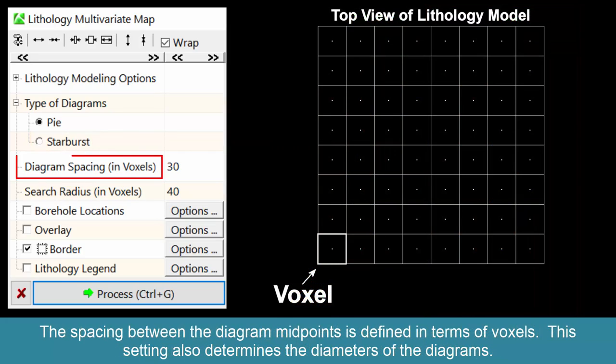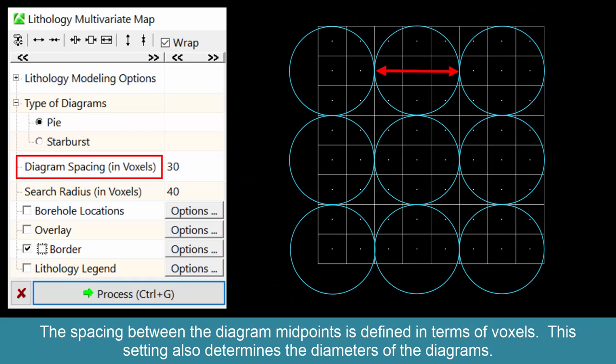The spacing between the diagram midpoints is defined in terms of voxels. This setting also determines the diameters of the diagrams.